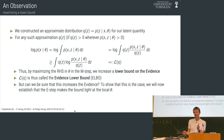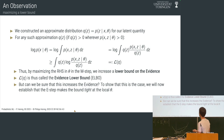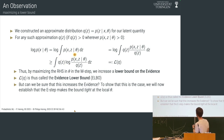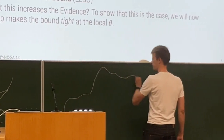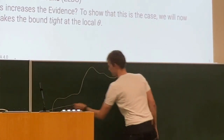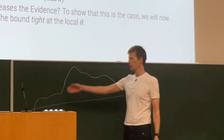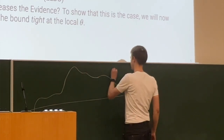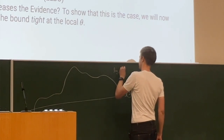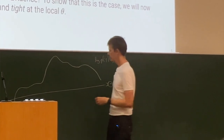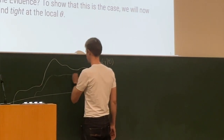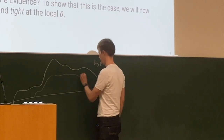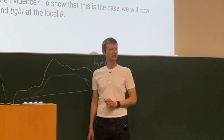So what we are doing when we maximize this seemingly weird expression is we are actually maximizing a lower bound on the evidence. There's this function called the evidence — it's a function of theta, the log probability of the data given the parameters — and we can compute another function L of q which lies below it.